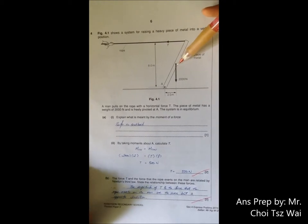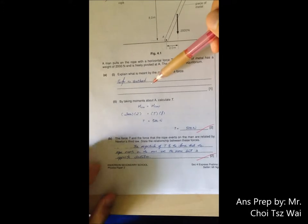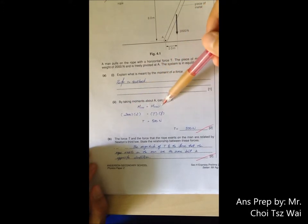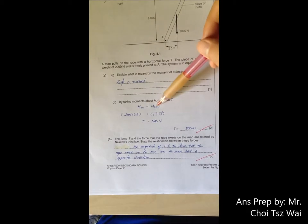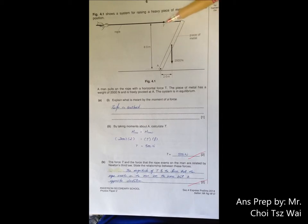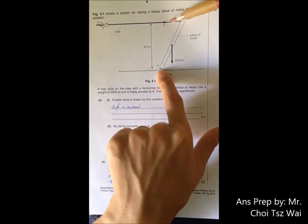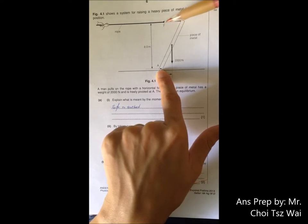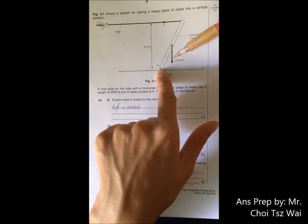Your question 4 is just moments. Part A1 refer to your textbook. Part A2, because it is in equilibrium, meaning that the clockwise moment equals the counterclockwise moment. And actually, the calculation here is quite easy. You only have two forces. This force, you are taking moment about this pivot. This force will give you a clockwise moment. This force will give you a counterclockwise moment.